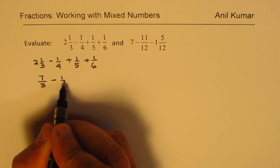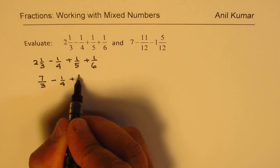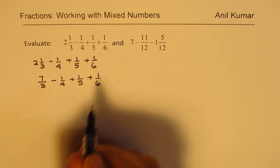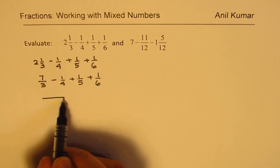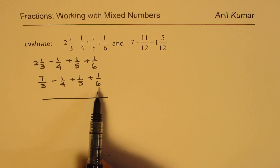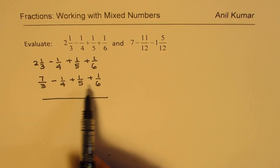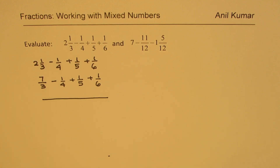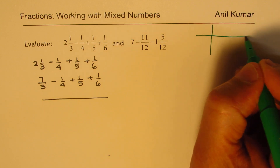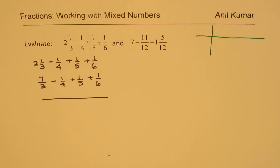So we have 7/3 minus ¼ plus ⅕ plus ⅙. The next step is to find the common denominator. We have denominators 3, 4, 5, and 6. Finding the lowest common denominator can be challenging at times — an easy way is to use the ladder division method.